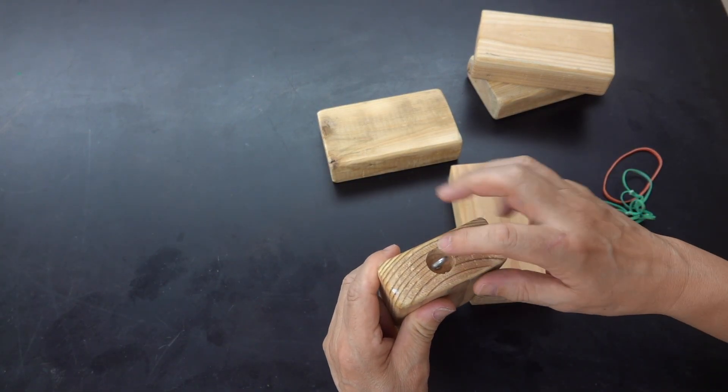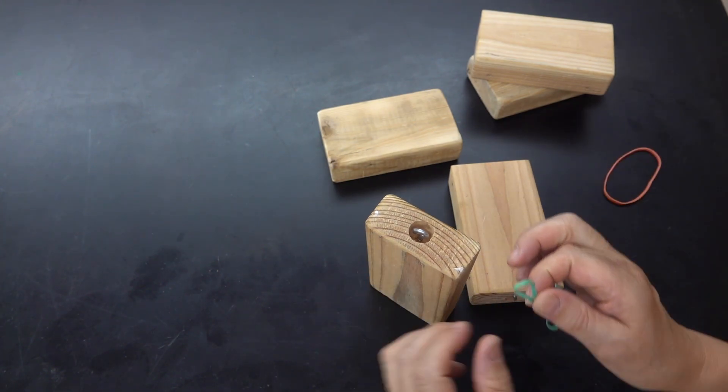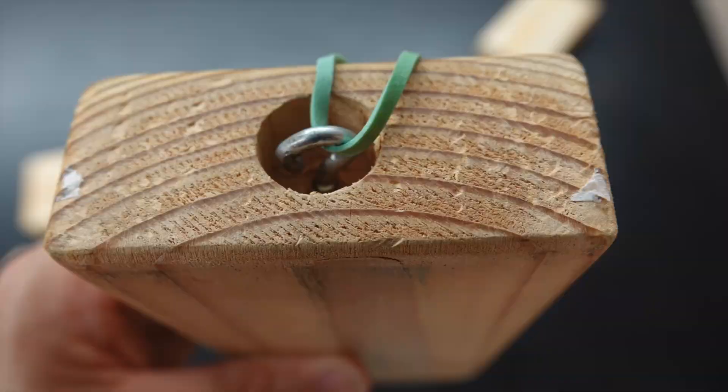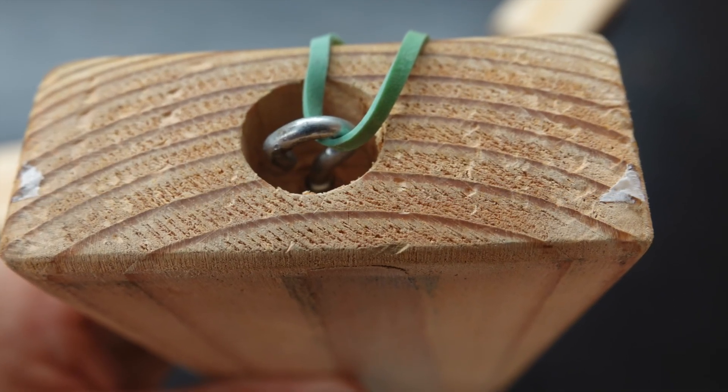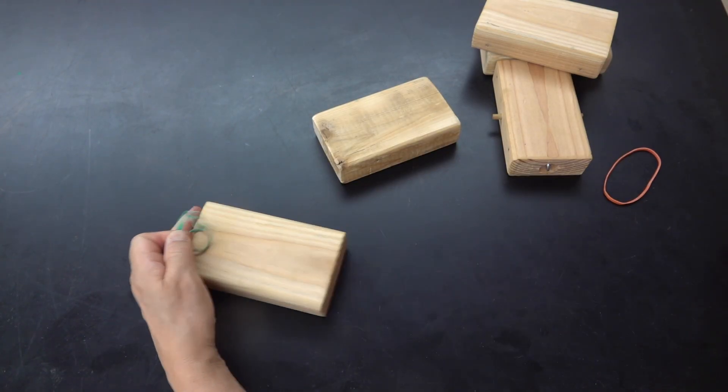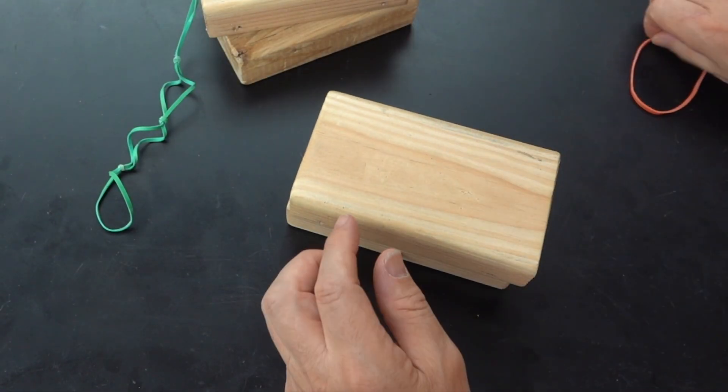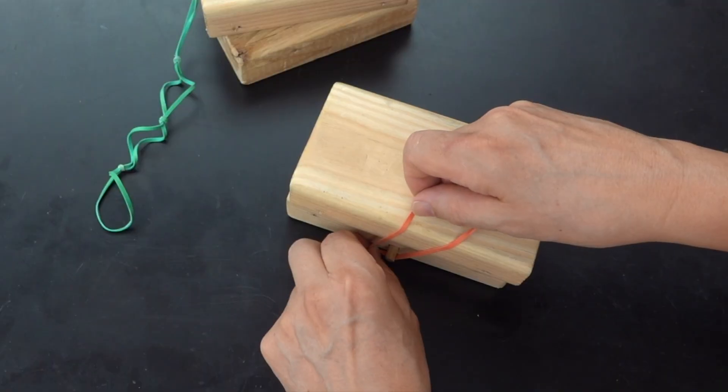Two of the blocks have eye hooks recessed into the side of it, and rubber bands can be attached to those eye hooks. This block has dowels attached to each side of it, that way we can add additional blocks and strap them in place.